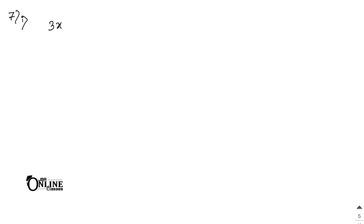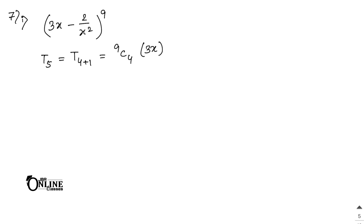Sum number 7.1: what is the index of the power of x occurring in the fifth term of the expansion of (3x − 2/x²)^9? Fifth term means T5 = T_{4+1} = 9C4 × (3x)^5 × (−2/x²)^4.